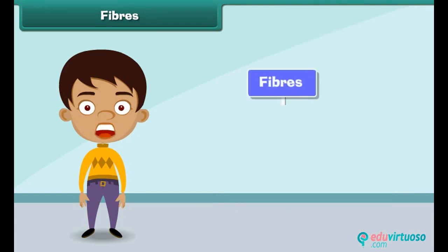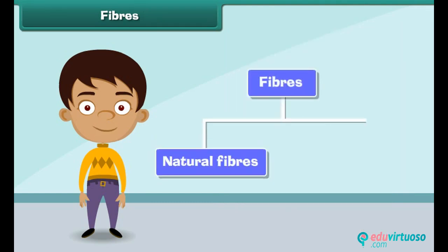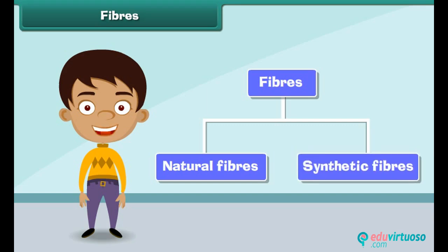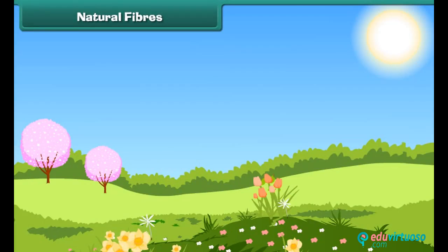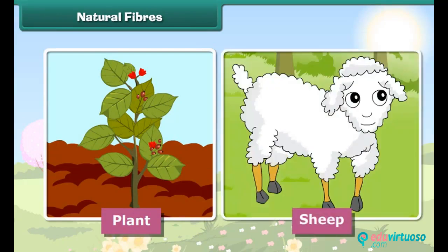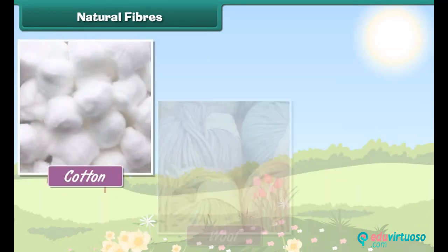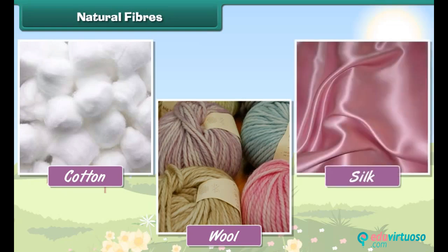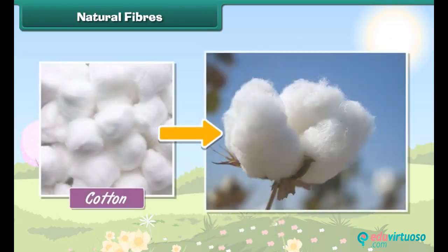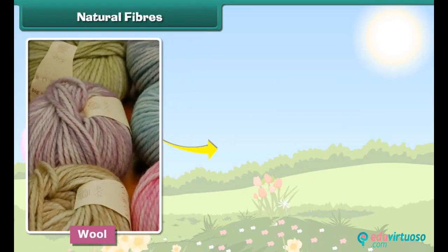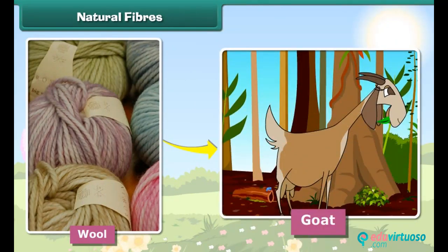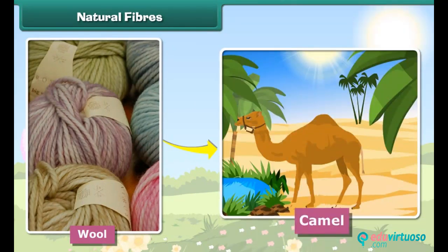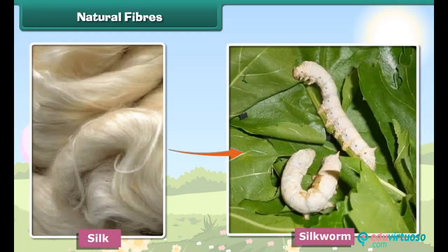Fibers are of two types: natural fibers and synthetic fibers. Natural fibers are made from plants and animals. Some natural fibers are cotton, wool, and silk. Cotton is obtained from plants. Wool is obtained from sheep, goats and camels. Silk is obtained from silkworms.